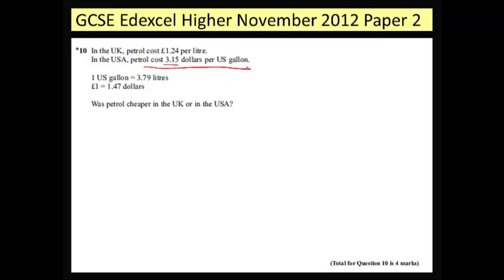What I'm going to need to do is take the UK cost in pounds per litre and change that to dollars and US gallons. The first thing I'm going to do is take the cost in pounds per litre and multiply it by how many litres are actually in a gallon. This tells me that the cost in pounds of a US gallon bought in the UK is £4.6996.